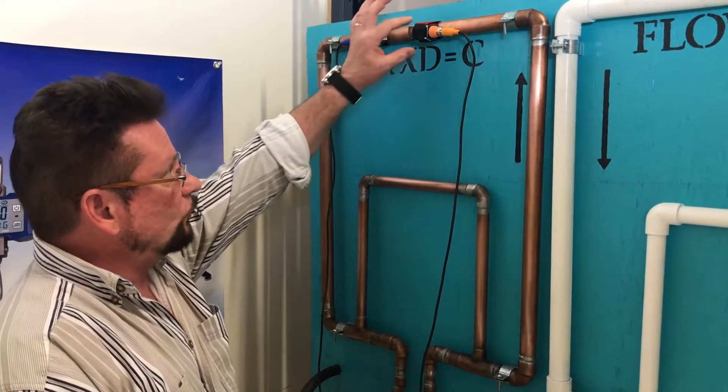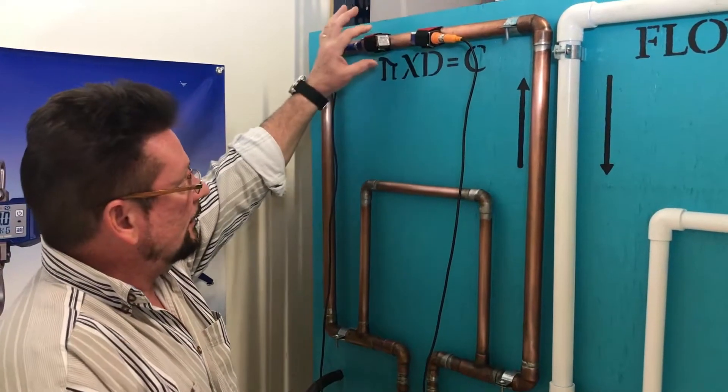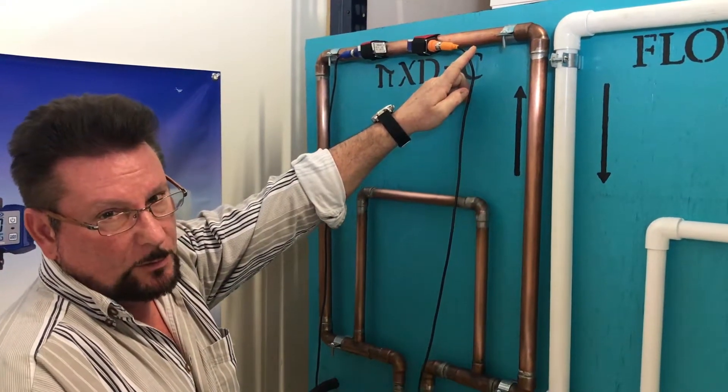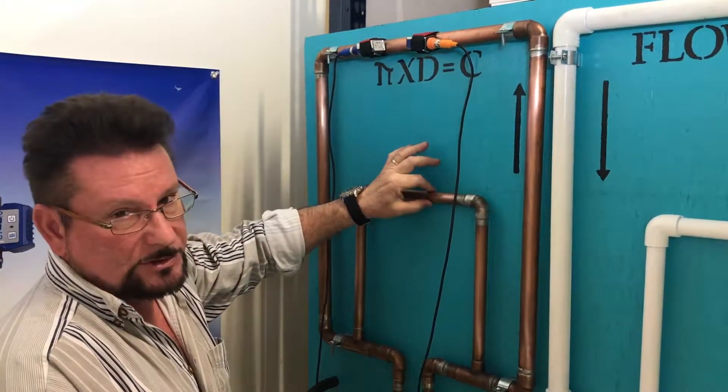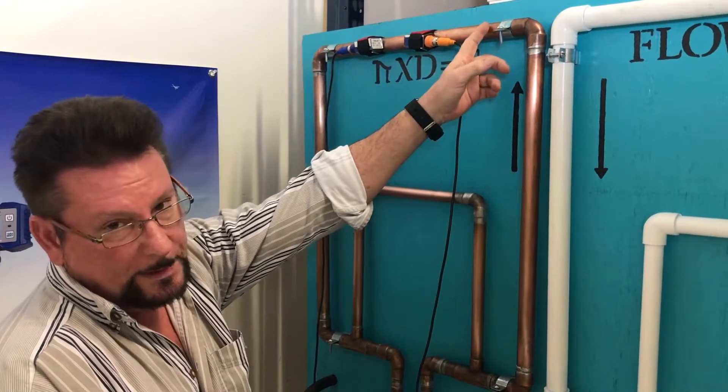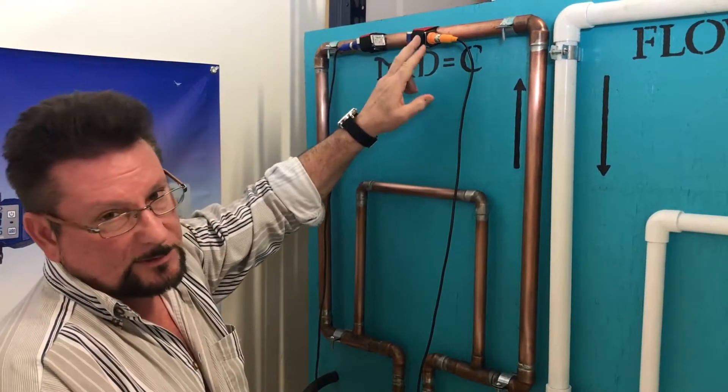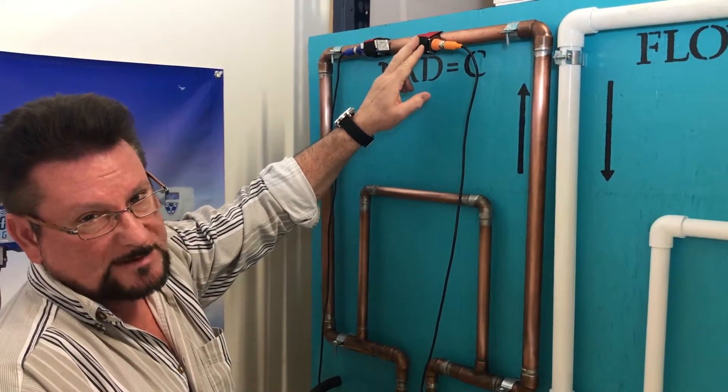Now, we're using S1 sensors, because our pipe size is between 3/4 inch and 4 inches. We want to use the smaller sensors, which are S1.